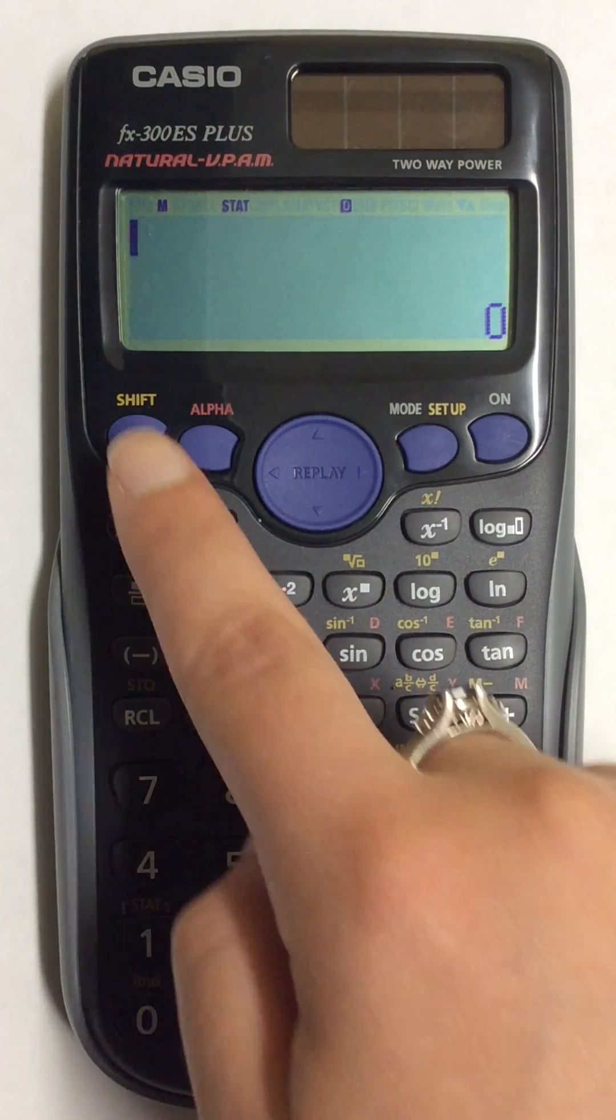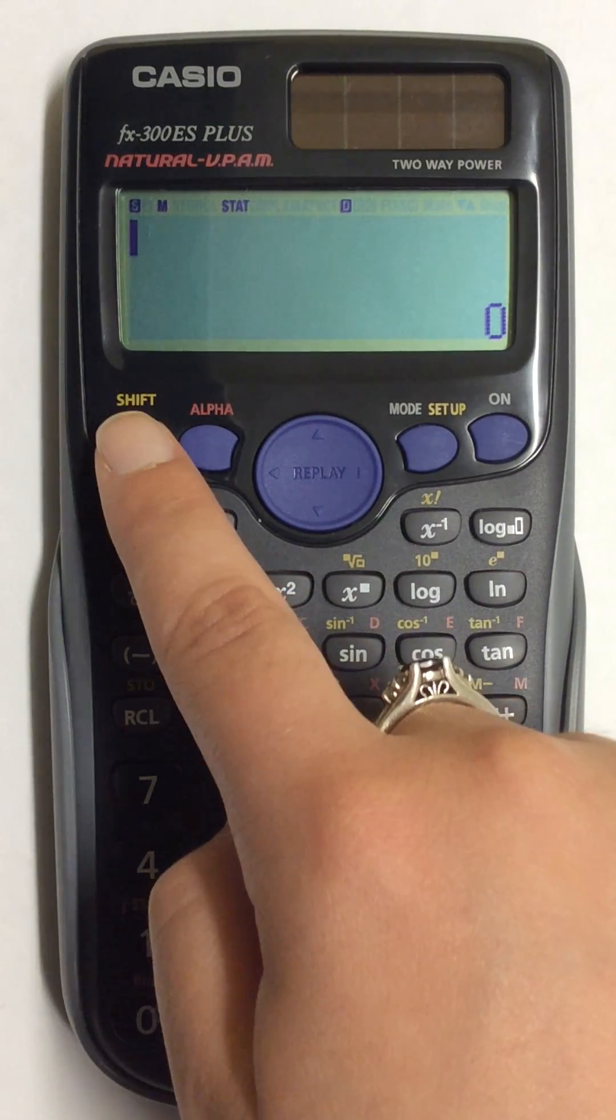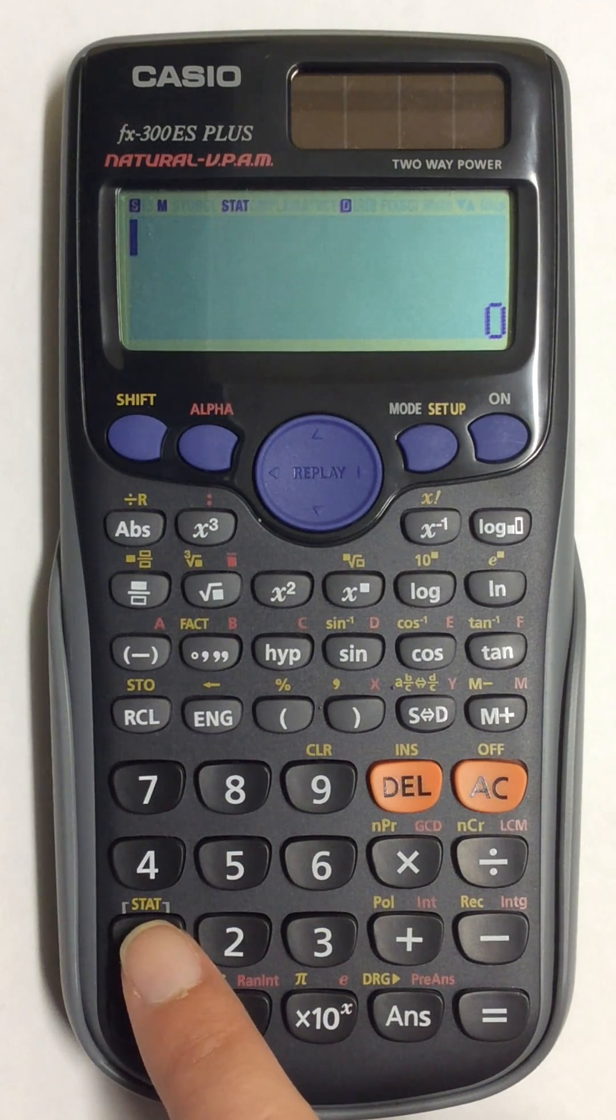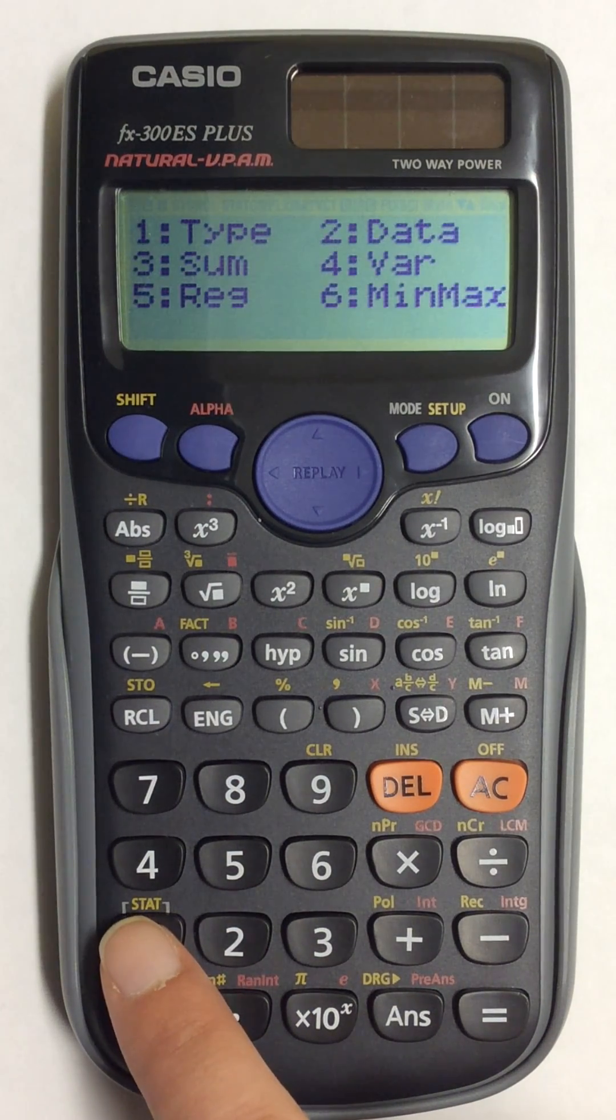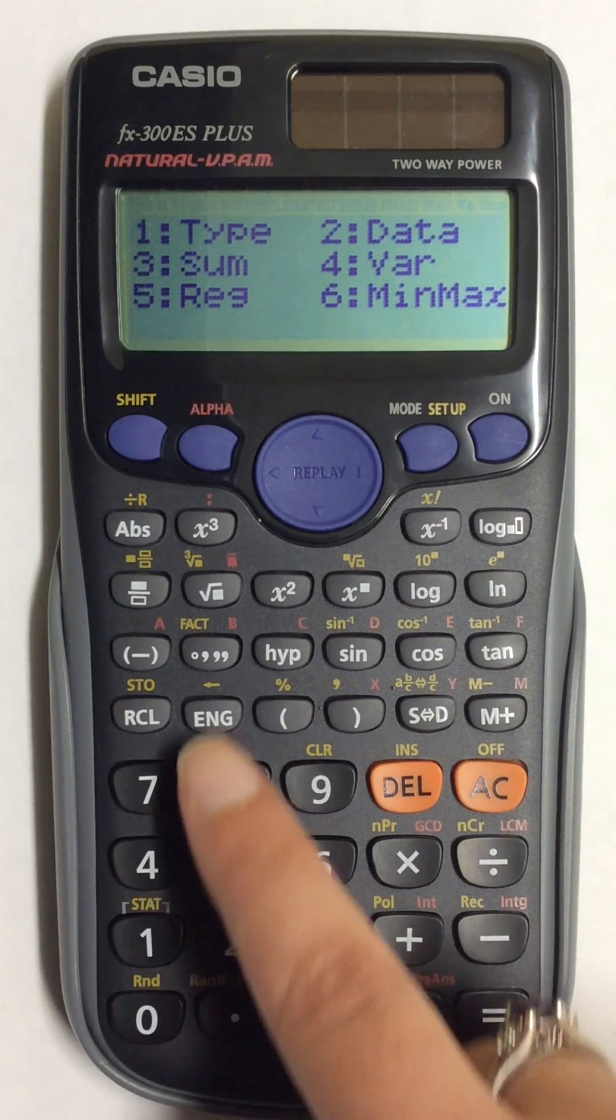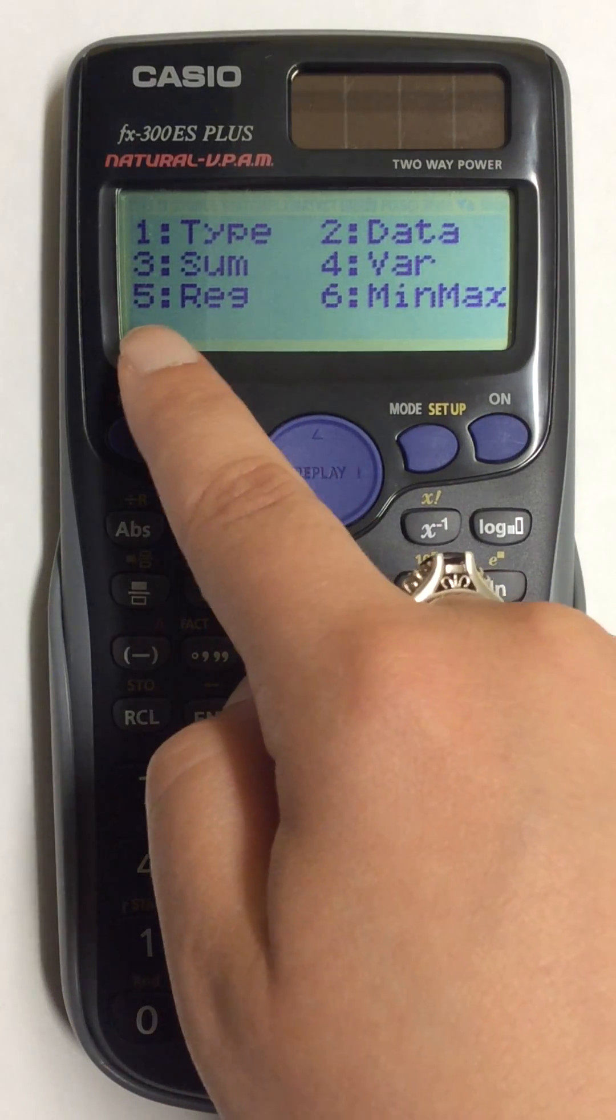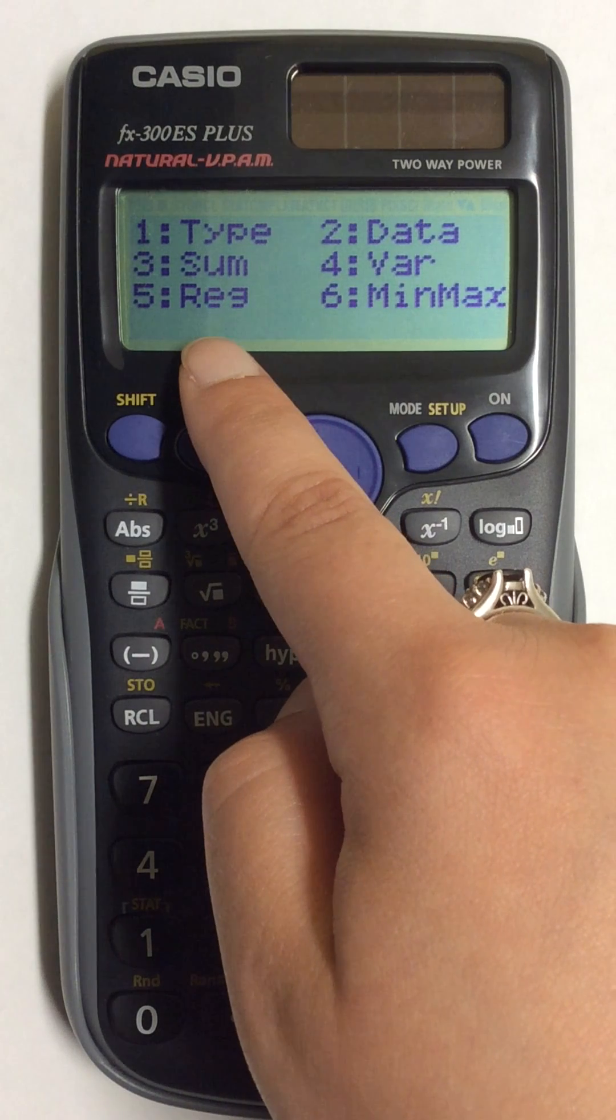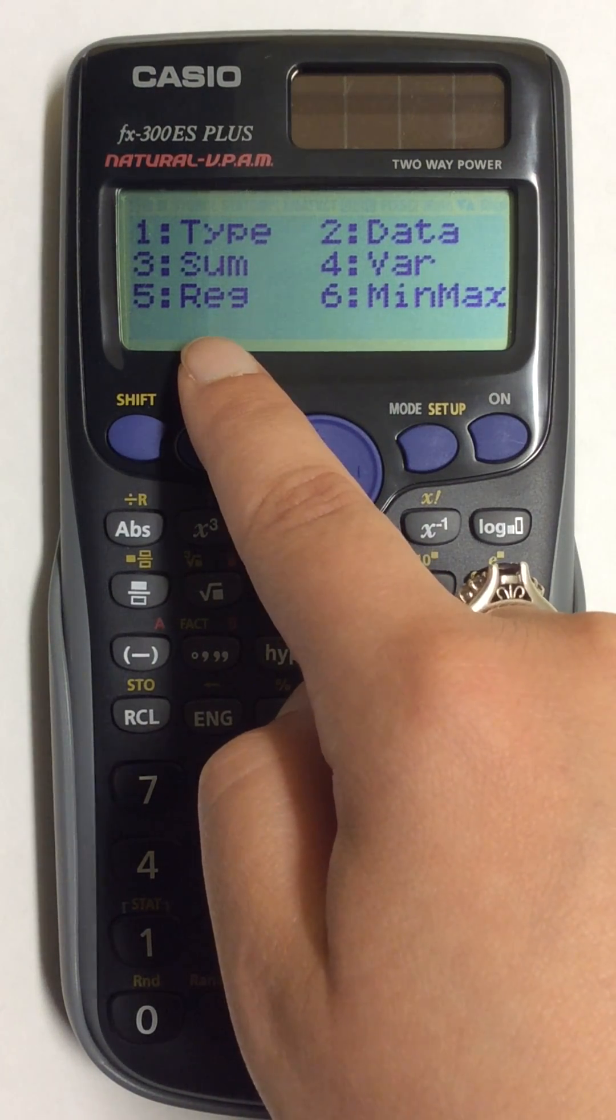Next, I'm going to press the shift button and then come down here to number 1, which says stat. To find values for your regression line, you're going to go to option 5 on this screen, REG.